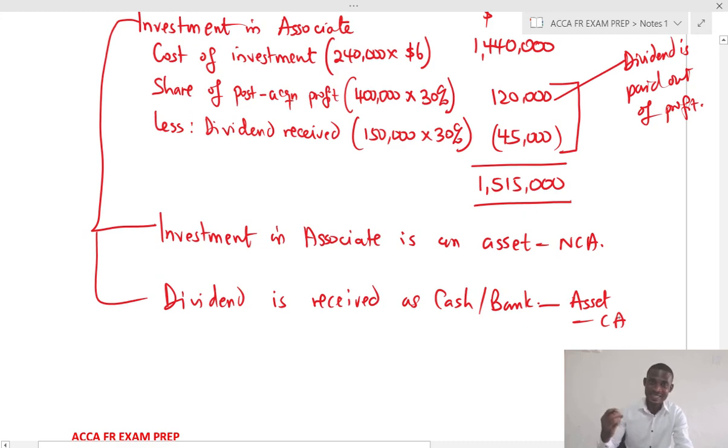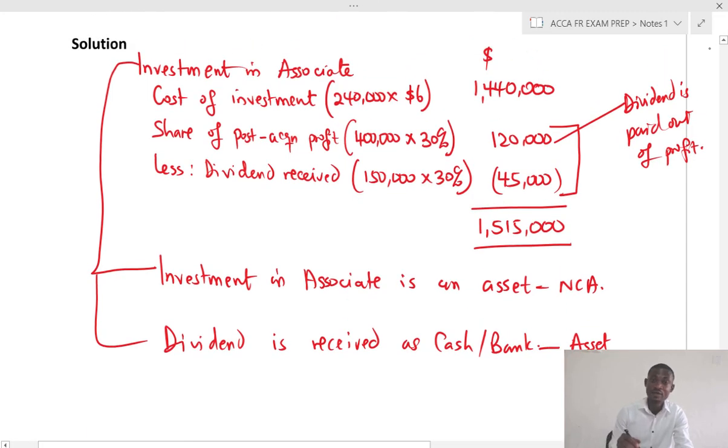And it's the reason we say that in building up the pro forma to account for the investment in associate, whenever there's a dividend paid, we take out the dividend from the share of profit in order not to double account for the dividend. Because the dividend, when it is received, is already in the cash of the group. And to avoid double counting, we deduct it from the share of profit.